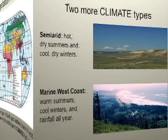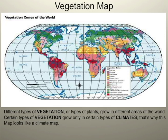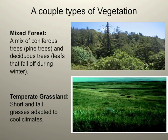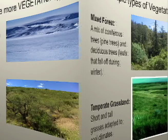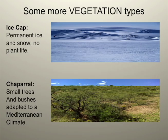This is a vegetation map. A vegetation map shows different types of plants that grow around the world. Different plants only grow in certain types of climates, as we will see later. As you can see, a mixed forest and a temperate grassland have completely different types of vegetation. This is because they have different climates. Some areas don't have any vegetation.